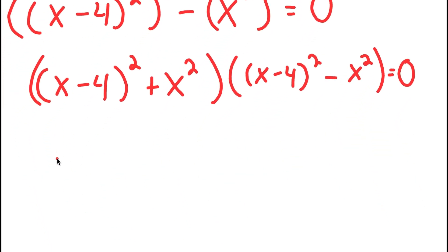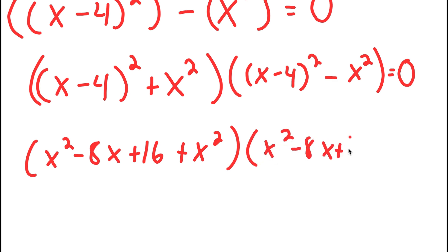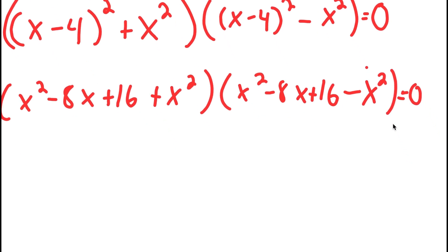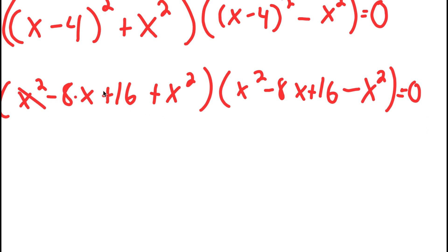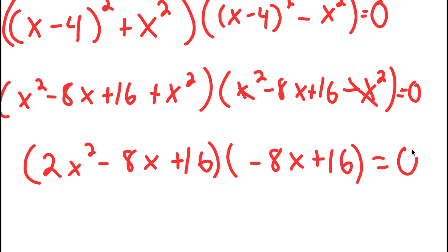Now I'm going to expand x minus 4 squared. So I get x squared minus 8x plus 16 plus x squared, times x squared minus 8x plus 16 minus x squared, which is equal to 0. These two cancel out, and these two add — x squared plus x squared is 2x squared. So I get 2x squared minus 8x plus 16 times negative 8x plus 16 is equal to 0.